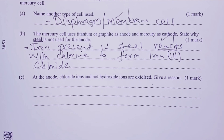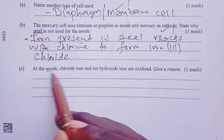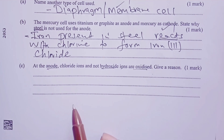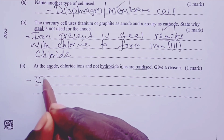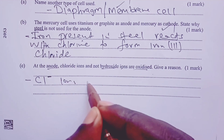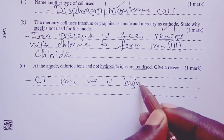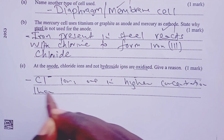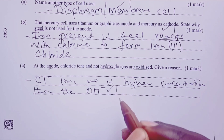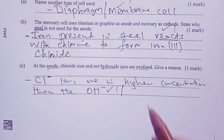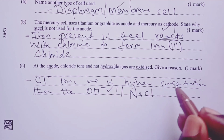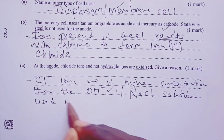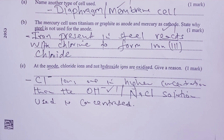Part C: At the anode, chloride ions and not hydroxide ions are oxidized. We are asked to give a reason. A candidate would tell the examiner that chloride ions are in higher concentration than the hydroxide ions — one mark. Alternatively, if a candidate stated that the sodium chloride solution used is concentrated, we would still give the mark.